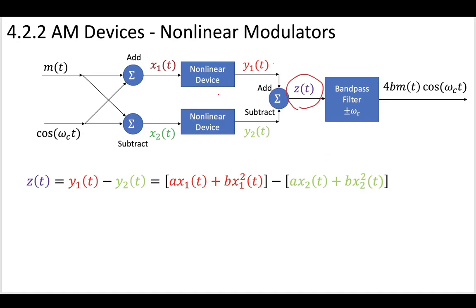This z has taken our message and a cosine at our carrier frequency, put them together, passed them through a nonlinear device. We modeled the nonlinear device using a power series, a two-term power series approximation, and we arrived at this z term.